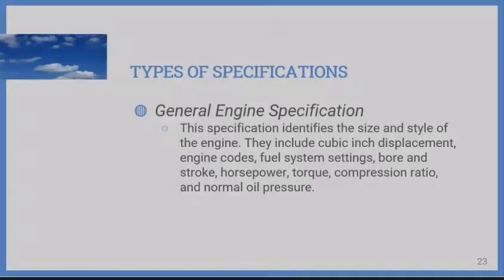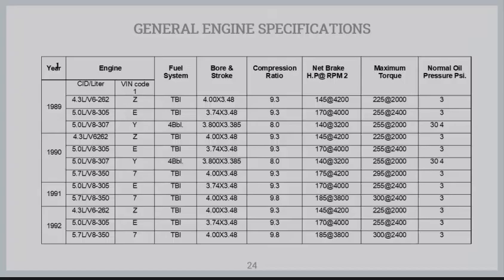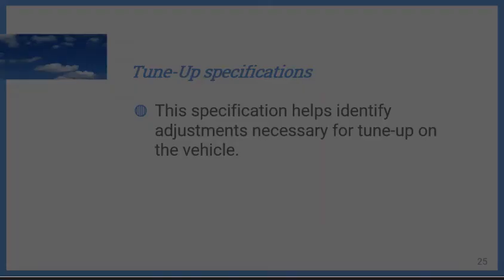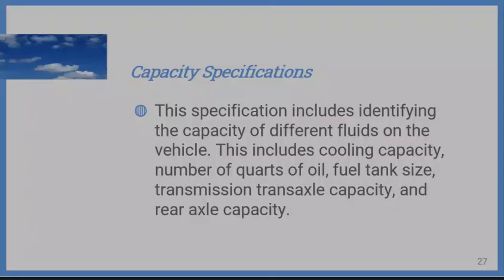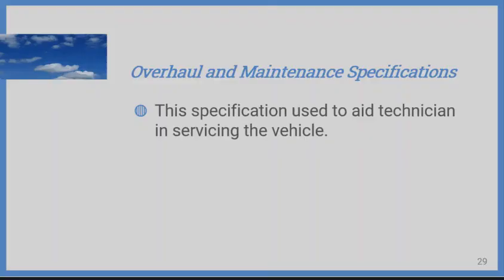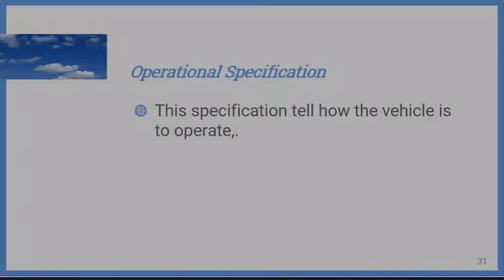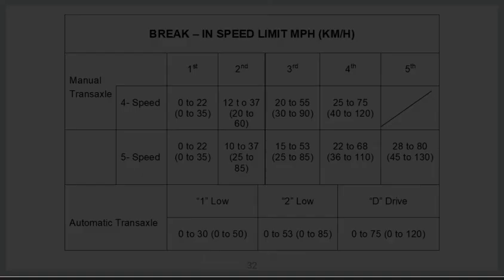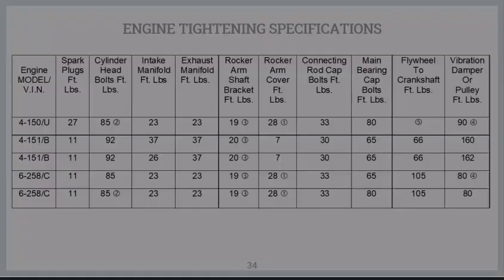Here are examples of the specification types: the general engine specification table, the tune-up specification table, the capacity specification table showing cooling system and capacity data, the overhaul and maintenance specifications for pistons, pins, and rings, the operational specification, and the torque specification table.